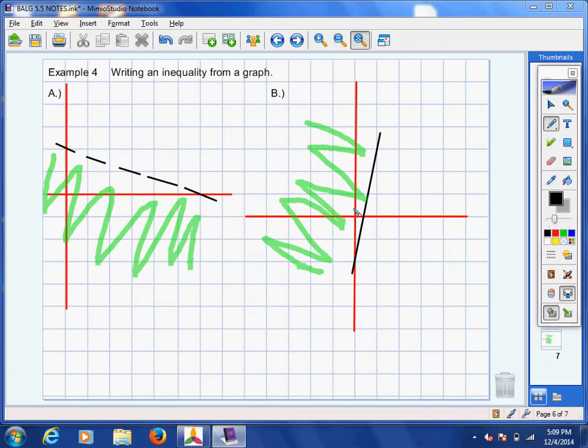Mrs. Thompson is back. I am at a return. We're going to finish up section 5.5, example 4. We're going to write an inequality from a graph. So we really need to be able to go both ways with this. If they give us an inequality, we should be able to graph it. And then if they give us the graph, we should be able to write the inequality. Let's go ahead and get started.